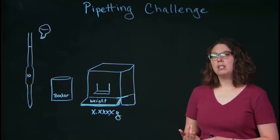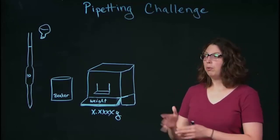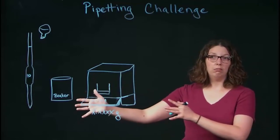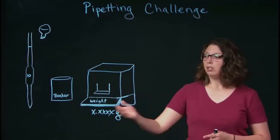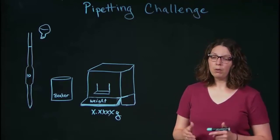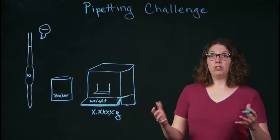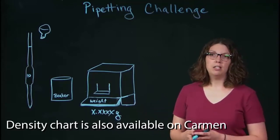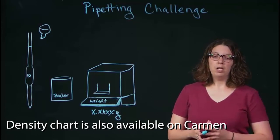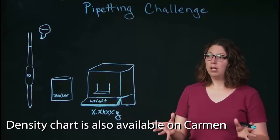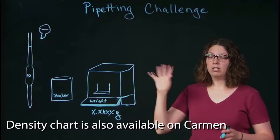Now you're going to need the density of water at whatever temperature your water is at in order to convert from grams to milliliters. We have in lab a chart that has the density of water at various temperatures. So you can use that chart very easily, it's up on the wall.